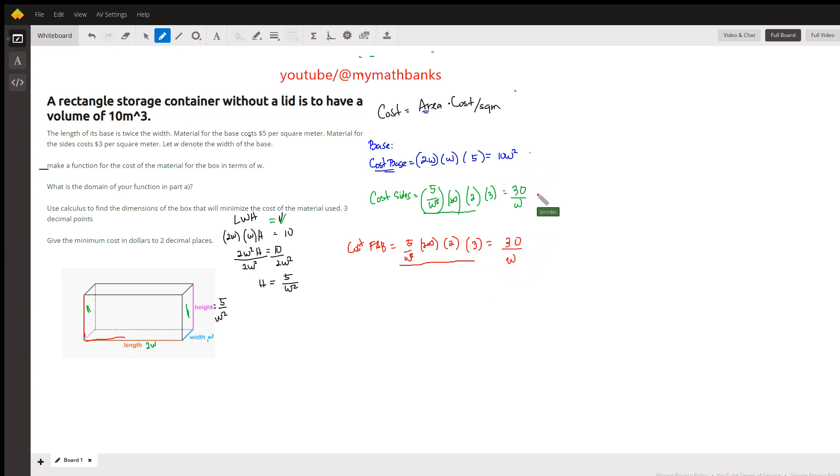So cost of base and cost of the four sides, so therefore, total cost, which I'm gonna call c, and this is the cost function of w, because we're solving it in terms of w, will be the cost of the base, 10w squared, this one right here, plus the cost of the two sides, 30 over w, plus the cost of the front.